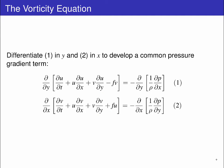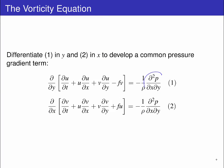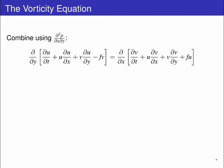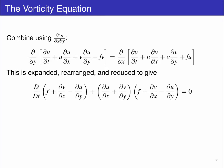We cross-differentiate the two equations — that is, differentiate equation 1 in y and equation 2 in x. This returns a common pressure gradient term: the second derivative of pressure in x and y. We can then combine these two equations using this common term. The product rule is used to expand this expression, which is then rearranged and reduced, to give an equation with the total time derivative of the Coriolis parameter, plus the x derivative of the v velocity, minus the y derivative of the u velocity, plus the horizontal divergence, times the same group of terms as we have with the total time derivative.